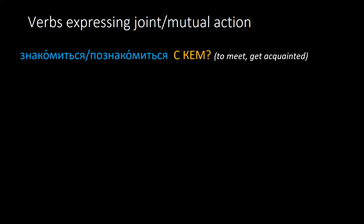С кем / С чем is frequently used with verbs expressing joint or mutual action, for example знакомиться / познакомиться с кем — to meet someone: папа, где вы с мамой познакомились? — Dad, where did you and mom meet?